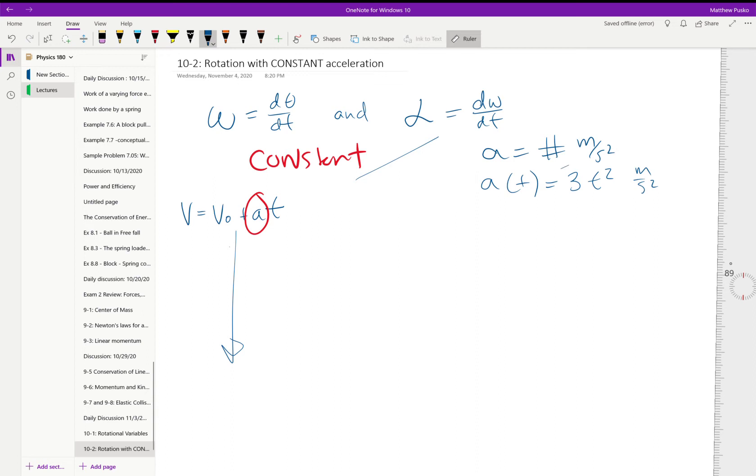So what other equations did we have? We had that x final is equal to x initial plus the initial velocity times time plus one-half times acceleration times time squared.